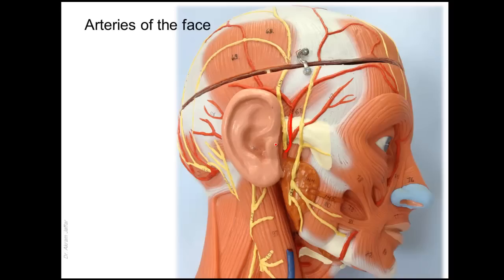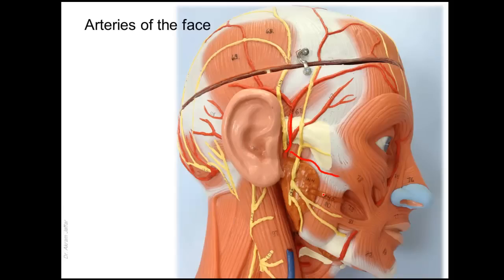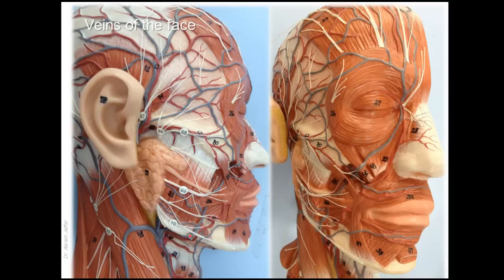The superficial temporal artery — its pulsations can be felt in front of the auricle, in front of the tragus, and opposite the zygomatic arch. At its beginning it gives off a transverse facial artery that passes beneath the zygomatic arch in association with the duct of the parotid gland.